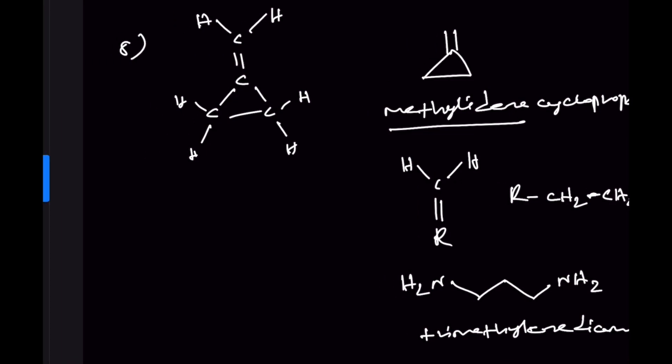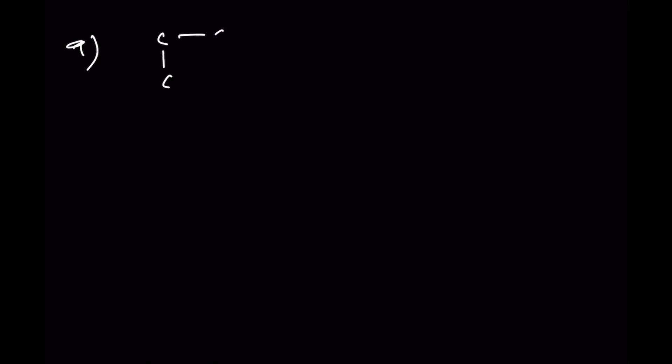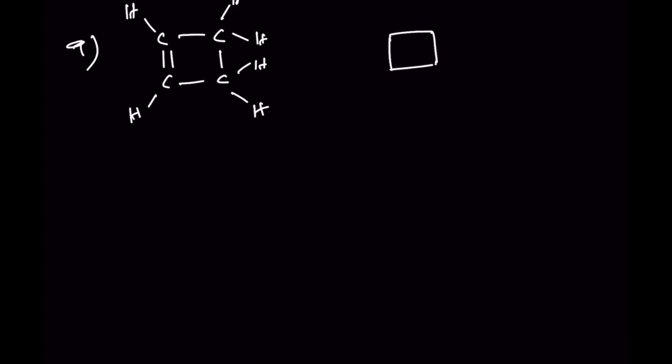Number nine: we can also write cyclobutene — a four-membered ring with a double bond. So in total, 9 isomers are possible for C4H6.